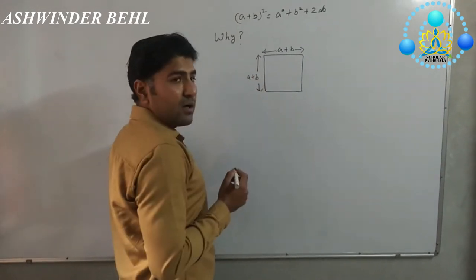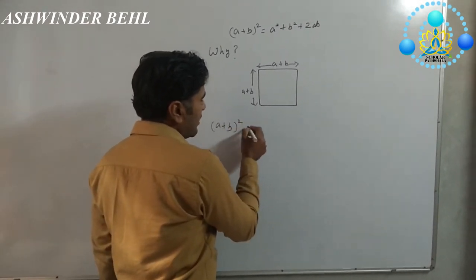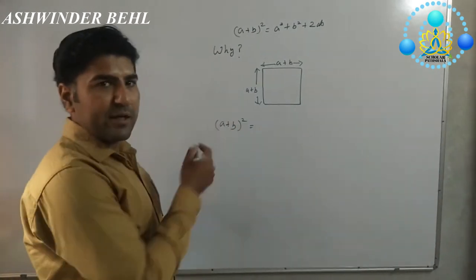We know that the area of a square is A plus B whole square, which means side times side.